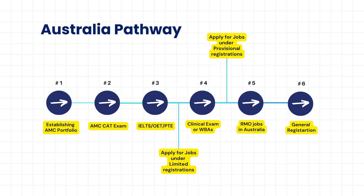Here's an easy-to-understand flowchart for you, which you can see on your screen. Now, the first thing to do in AMC is to set up your AMC portfolio, that is your ECFMG. Once you're done with that, you can book your AMC MCQ CAT exam. That's part one of the AMC exam.